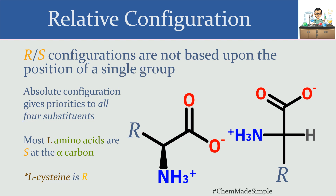Of the 20 amino acids our body uses or takes in through diet — essential and non-essential — only cysteine has an R configuration in its L form, because its R group contains sulfur, which has a higher priority than any of the oxygens attached to that carbon.